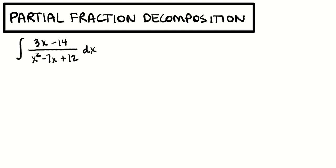Now the next type of fraction we need to be able to integrate is one that, if we look at it right now, there's not really anything we're able to do with it. If instead of 3x minus 14 we had 2x minus 7 in the numerator, we'd have that u-prime over u pattern and could use u-substitution. But that's not what we have.